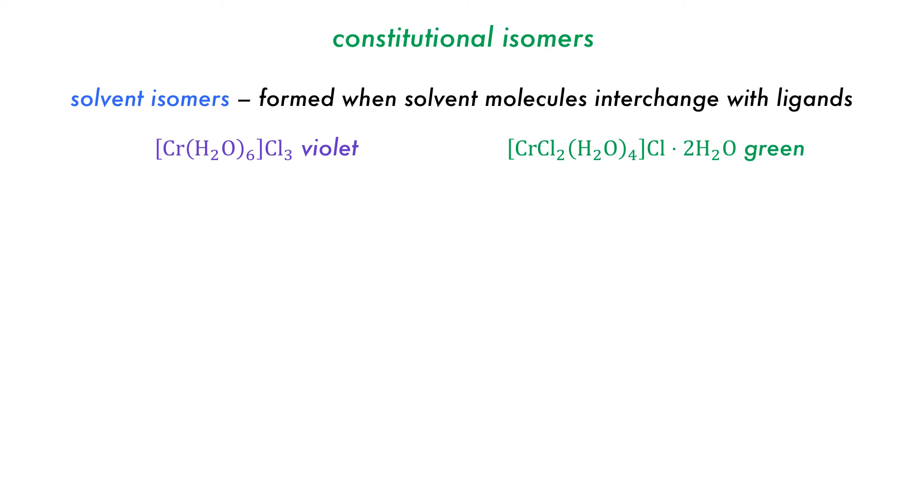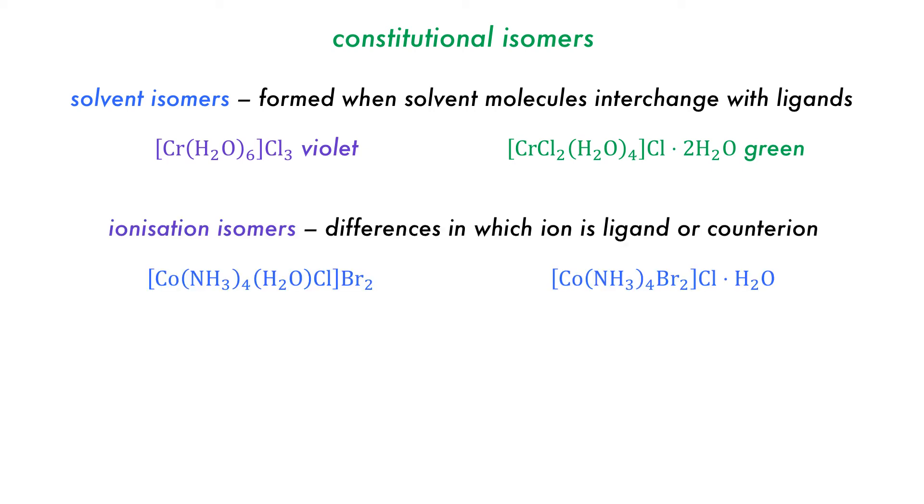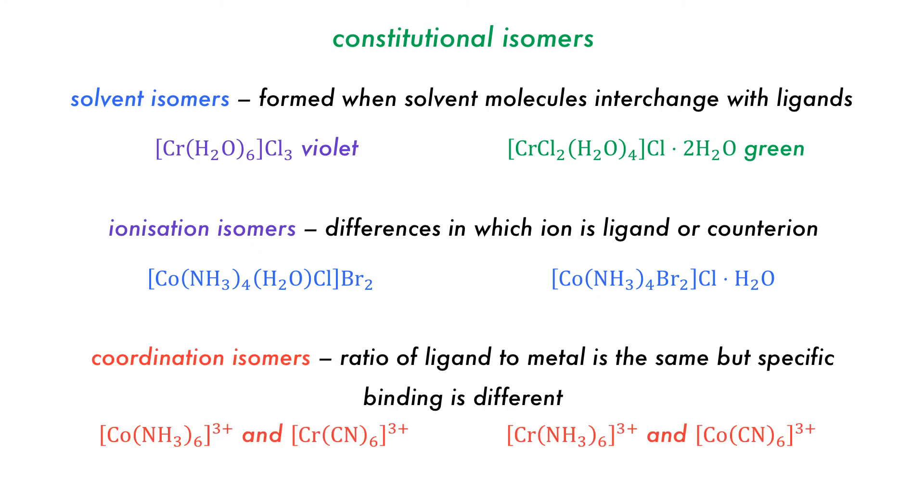Solvent isomers are formed when solvent molecules interchange with ligands within the coordination sphere. Ionization isomers occur from interchange of ligands and their charge-balancing pairs. Coordination isomers happen when the overall composition of a system is the same, but the coordination of the compounds vary.